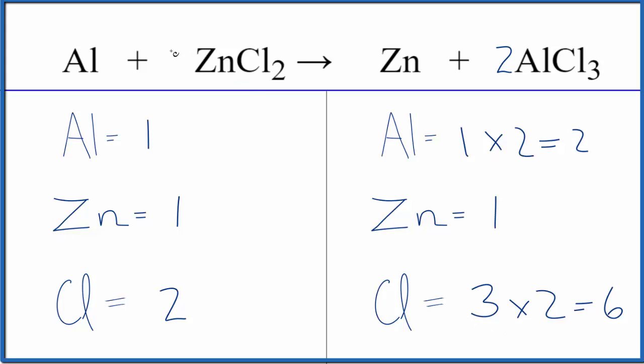Now if we put a three in front of the zinc chloride, one times three, that would give us three zincs. But we have this two times three here. That'll give us six.